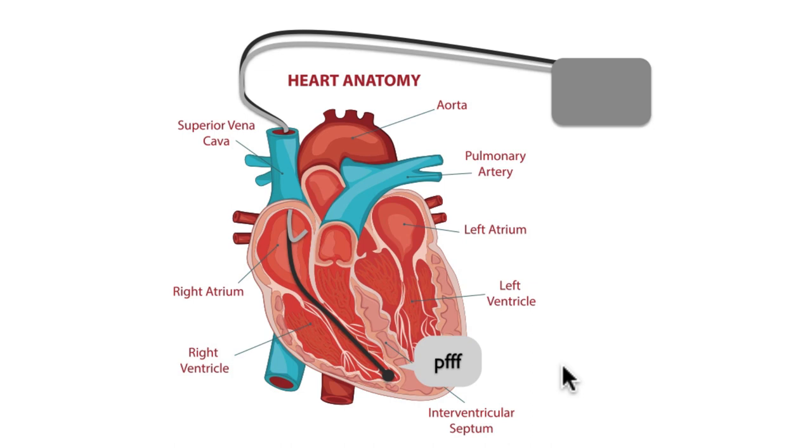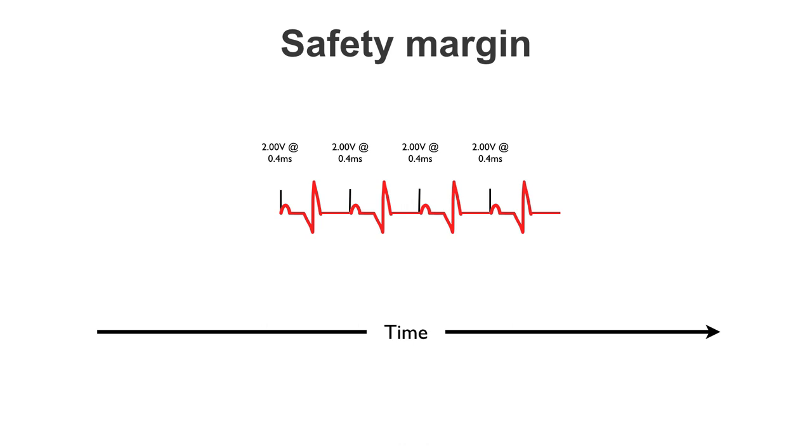Well, the pacemaker is delivering an output pulse, but it is failing to have an effect. This is usually a very bad sign, and I'd like to explain why. When we program an output pulse, we find the threshold of the tissue, and we make sure the output pulse is twice as large as the minimum amount of energy required to trigger a depolarization.